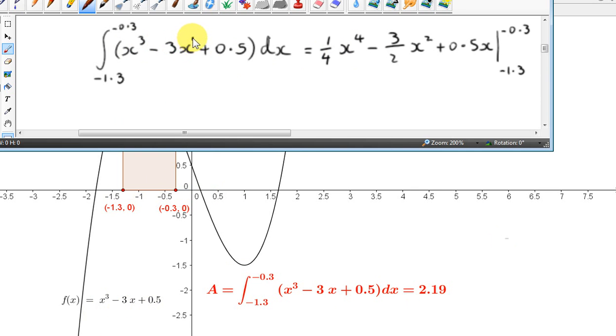We do the same here. The power is 1. We add 1 to 1 to get 2 and divide by the new power to get minus 3 halves x squared. And when we integrate a constant with respect to x, we get that constant times x. So we get 0.5x.